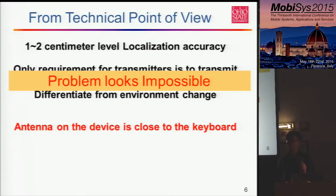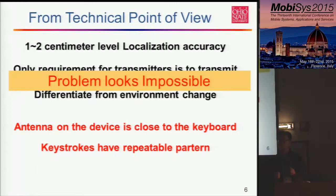First, the antennas are on the device and the keyboard is also on the device, so the antennas are quite close to the keyboard. The source of the signal and the finger movement we want to track are close to each other, which gives us a benefit — we can probably still track. Another advantage is that keystrokes have repeatable patterns: if you type 'A' this time and 'A' again next time, it is highly likely that for a single user, you will have a similar movement pattern for the same keystroke. This is something we will utilize in our algorithm, and we will show it is possible.